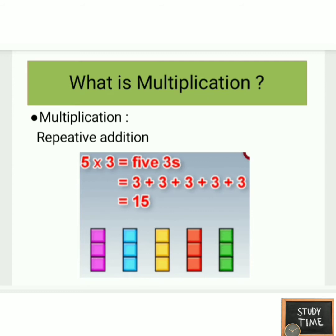What is multiplication? Multiplication is nothing but repetitive addition. Here, three cubes are arranged five times, so it is five threes — five into three. That is three plus three plus three plus three plus three, which equals 15. So it is repetitive addition.